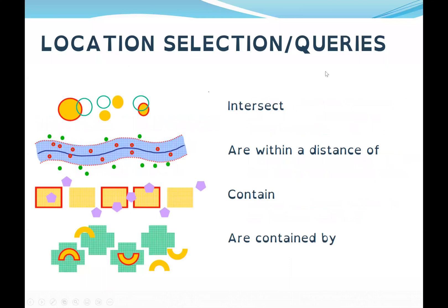For location selection queries, we have four types. We have intersect — where green circles intersect with the yellow. We have 'are within a distance of' — where red dots fall within a specific distance. Then 'contain' — where objects are contained within yellow boxes. And 'are contained by' — which we can also see illustrated. We shall go through each of these.